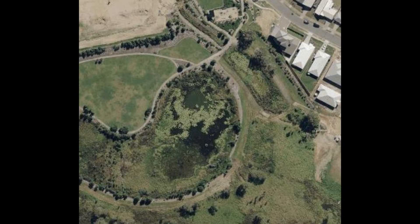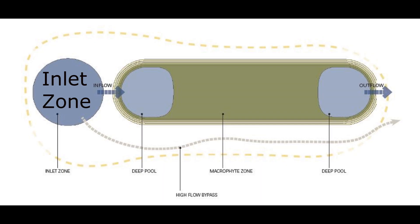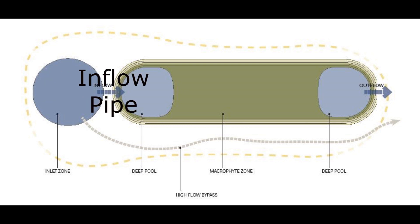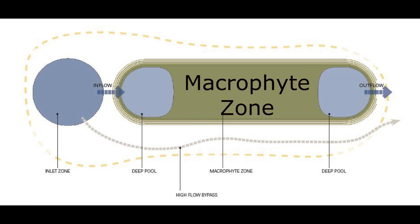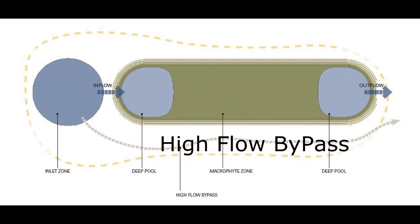Here is an aerial view of the constructed wetland next to the urban development. It has been designed to have an inlet zone or sediment basin at the start. This has an inflow pipe to allow water to flow into the main wetland, which consists of deep pools and a macrophyte zone. It can also be bypassed during high flow events.